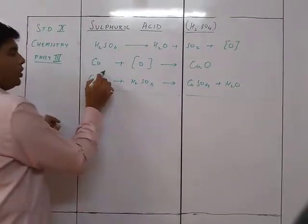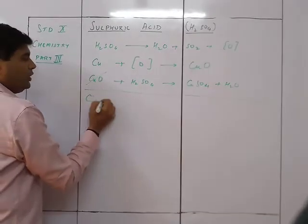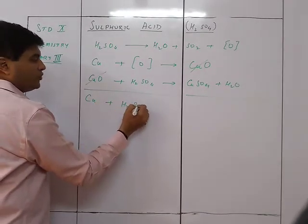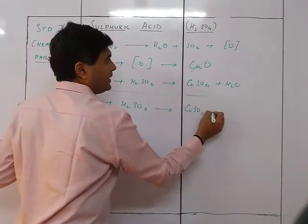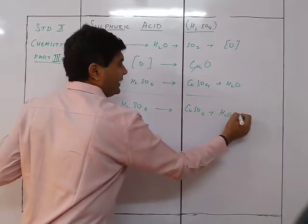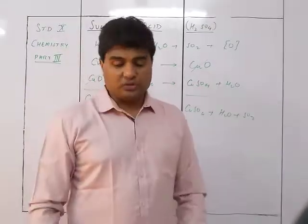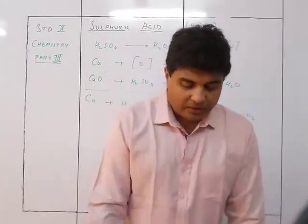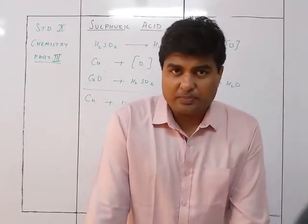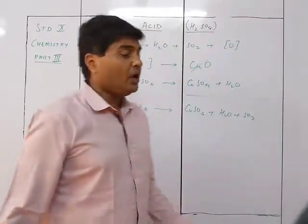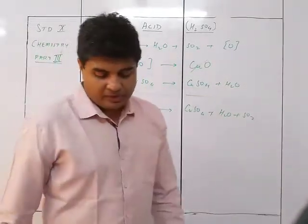Combining the three equations, CuO cancels out. The net result is: Cu + H₂SO₄ → CuSO₄ + H₂O + SO₂. This shows that concentrated sulfuric acid is a very good oxidizing agent because of the nascent oxygen formed during decomposition of H₂SO₄.